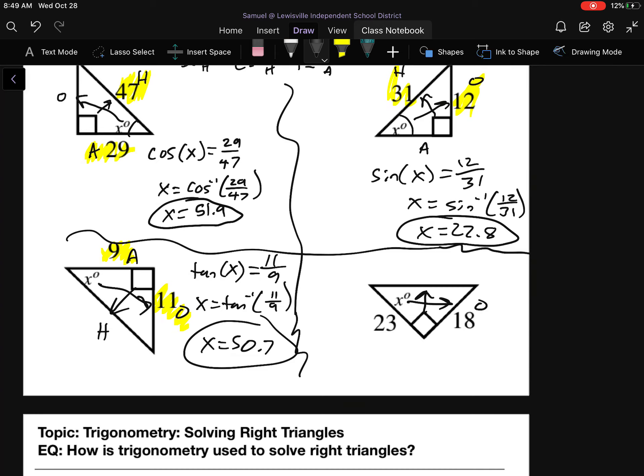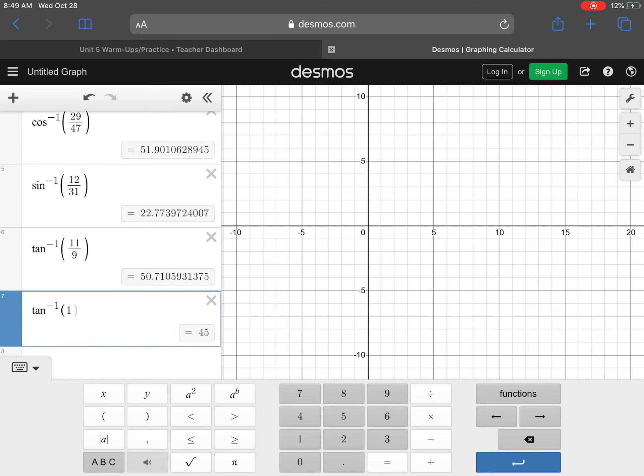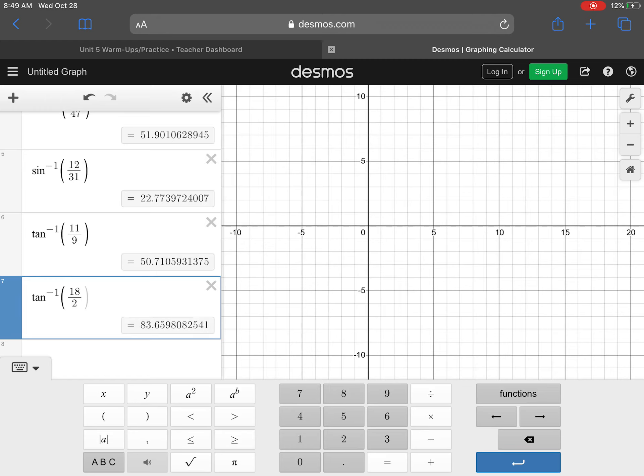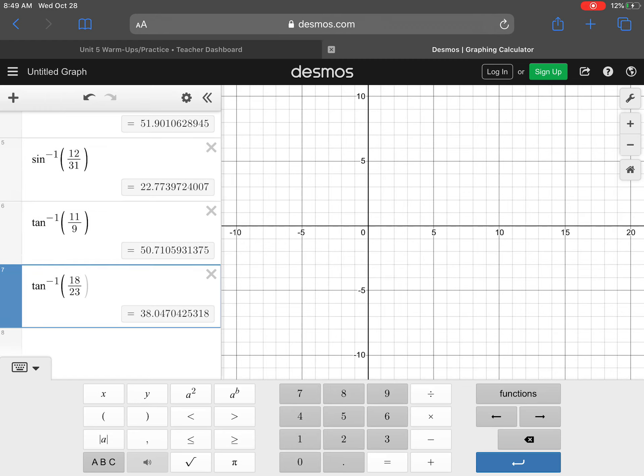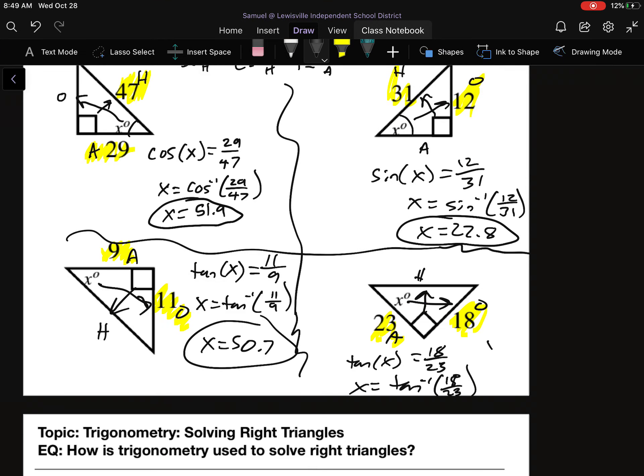Last one. We draw our arrow. That's the O. Draw the arrow. That's the H. Last side is the A. So what do we have here? We have O and we have A. So this is another tangent. Tangent of X equal to 18 over 23. So X should be inverse tangent of 18 over 23. That's going to be 38.04. So 38 flat. Just 38.